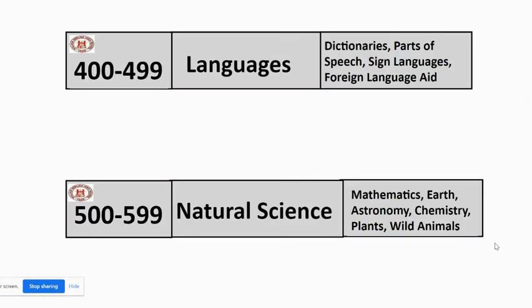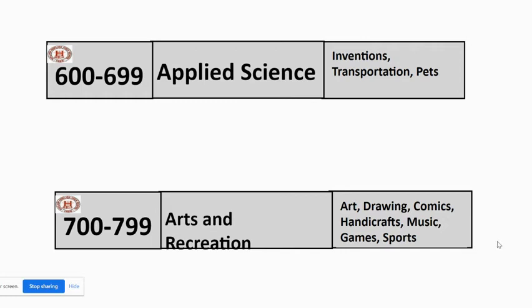The 500s are way down on the far west side in the bottom on the left, and those are going to be all kinds of things about nature, mathematics, and the earth. The 600s are going to be right next to them on the far west end on the bottom. And that's going to be our applied science — the inventions, transportation, pets, how to do your hair, engineering.